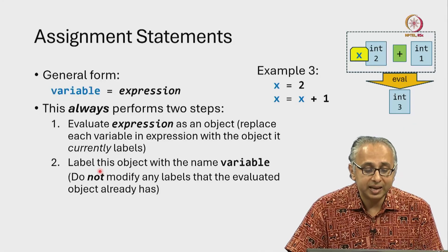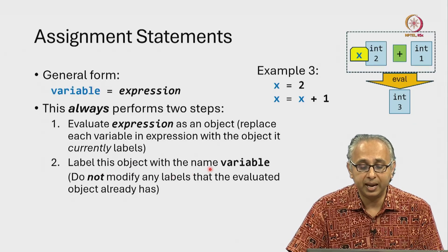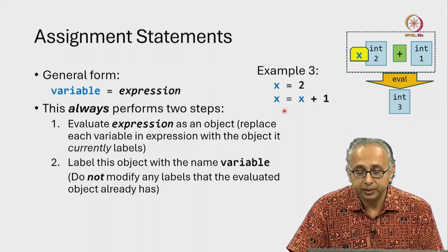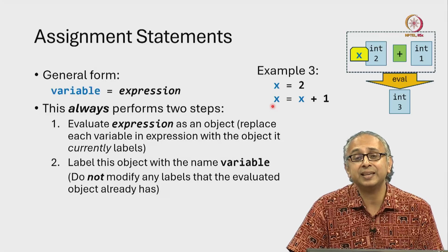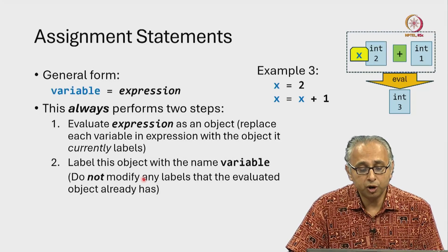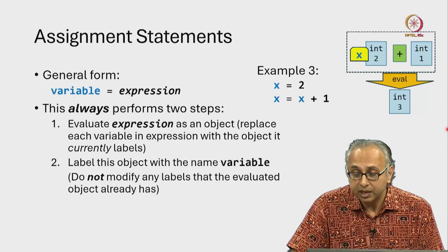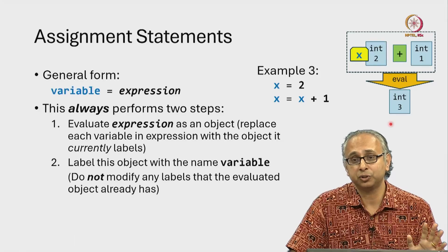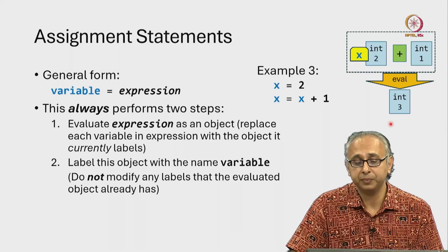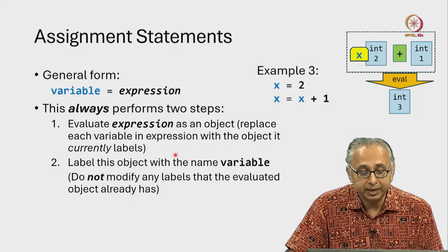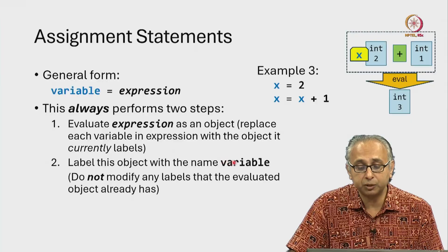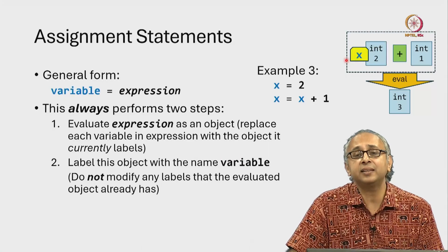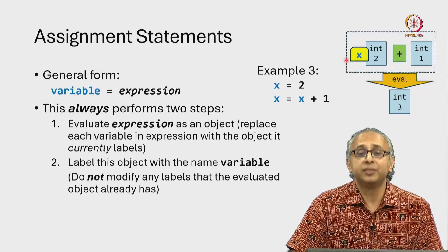Step 2 says label this object with the name variable. The variable name on the left hand side is x. The rule says do not modify any labels that the evaluated object already has — the evaluated object has no labels on it, so we don't have to worry about that. But we do have to label this object with x. However, x is already labeling this other object.